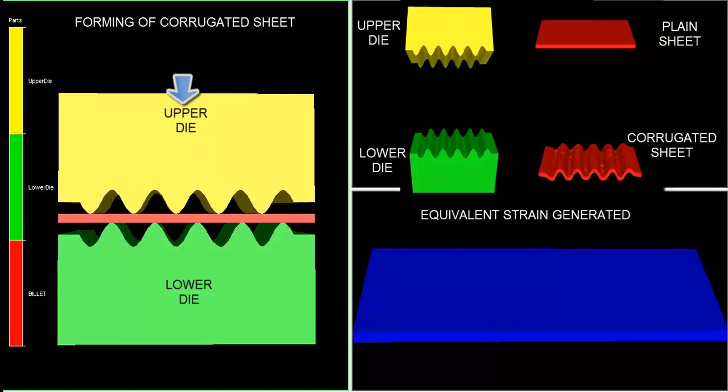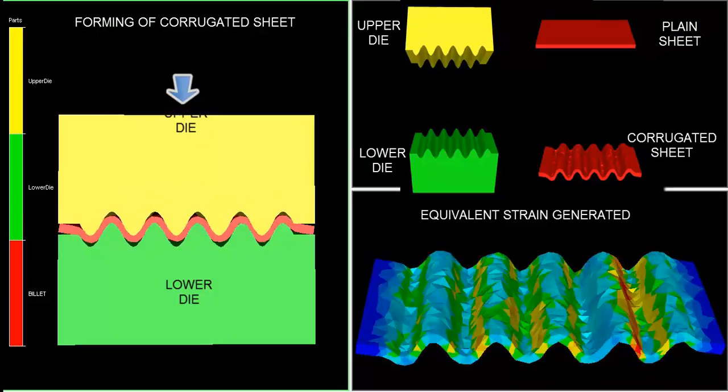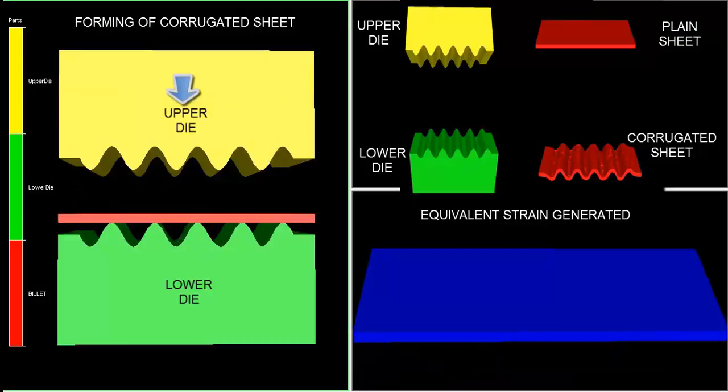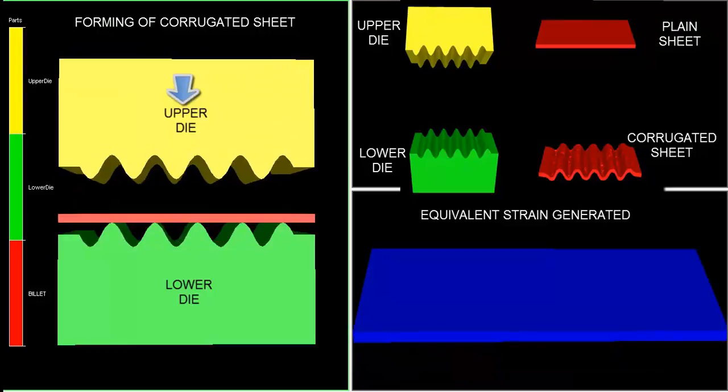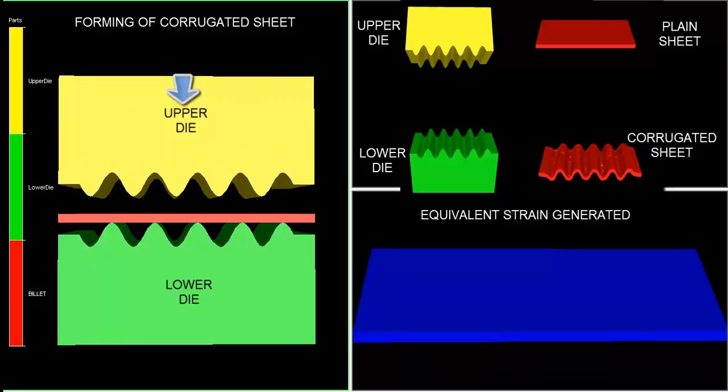Initially, the strain in the billet is zero. During the operation, the strain rises due to deformation, reaching up to 1.806. Greater strain indicates more deformation, more grain refinement, and hence better mechanical properties.